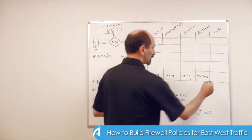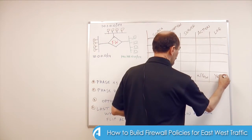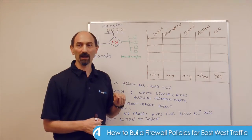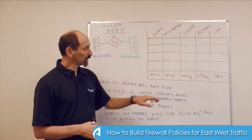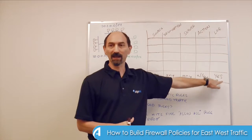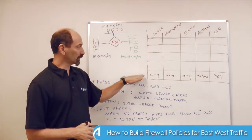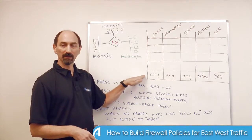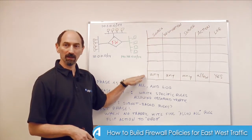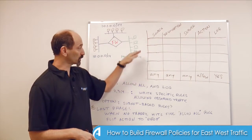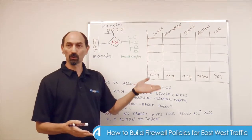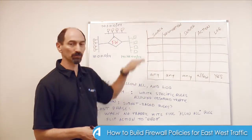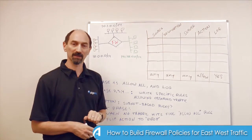The important thing is to place in the log column of that any/any/any allow rule a log statement of yes, indicating that you want a record of every connection hitting this very broad rule. You place the rule — it's the only rule — but it's at the bottom of the rules. We're going to be adding additional rules above it as we go on.